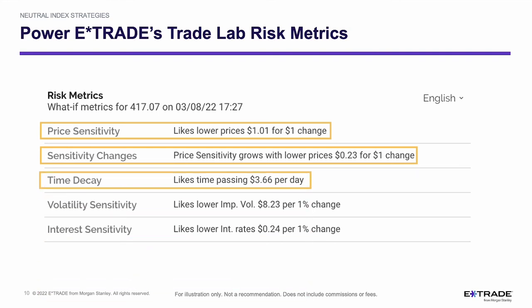The third component is time decay or theta — $3.66 per day. Time can only go one way, so the $3.66 a day is pretty much guaranteed to happen. Volatility, on the other hand, can expand or contract. In this case it likes lower implied volatility — $8.23 for a 1% change. Seeing a big contraction in volatility, like the VIX going from 25 down to 20, would be a five percentage point change, and for each 1% change, about $8.23 benefit. The final component is interest rates — it's really not very sensitive to interest rates.